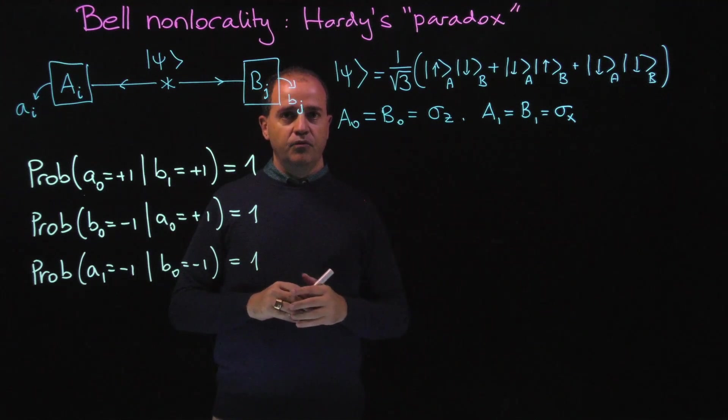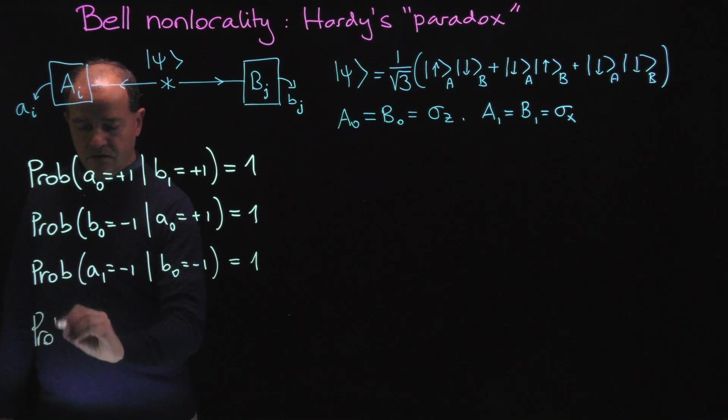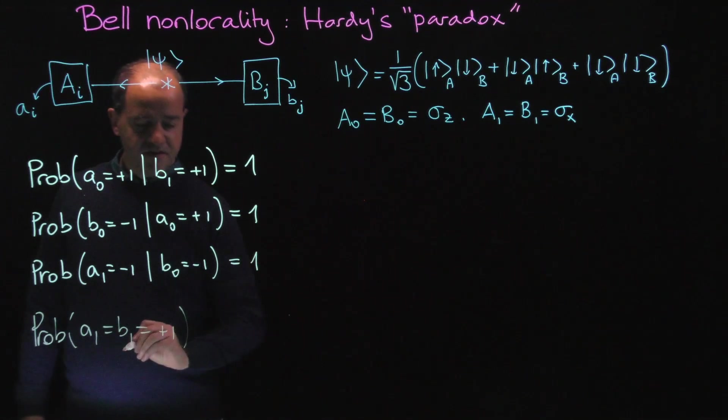So the question we are going to ask is: what is the probability both A1 and B1 give the result plus 1? This can be inferred very quickly by classical logic.